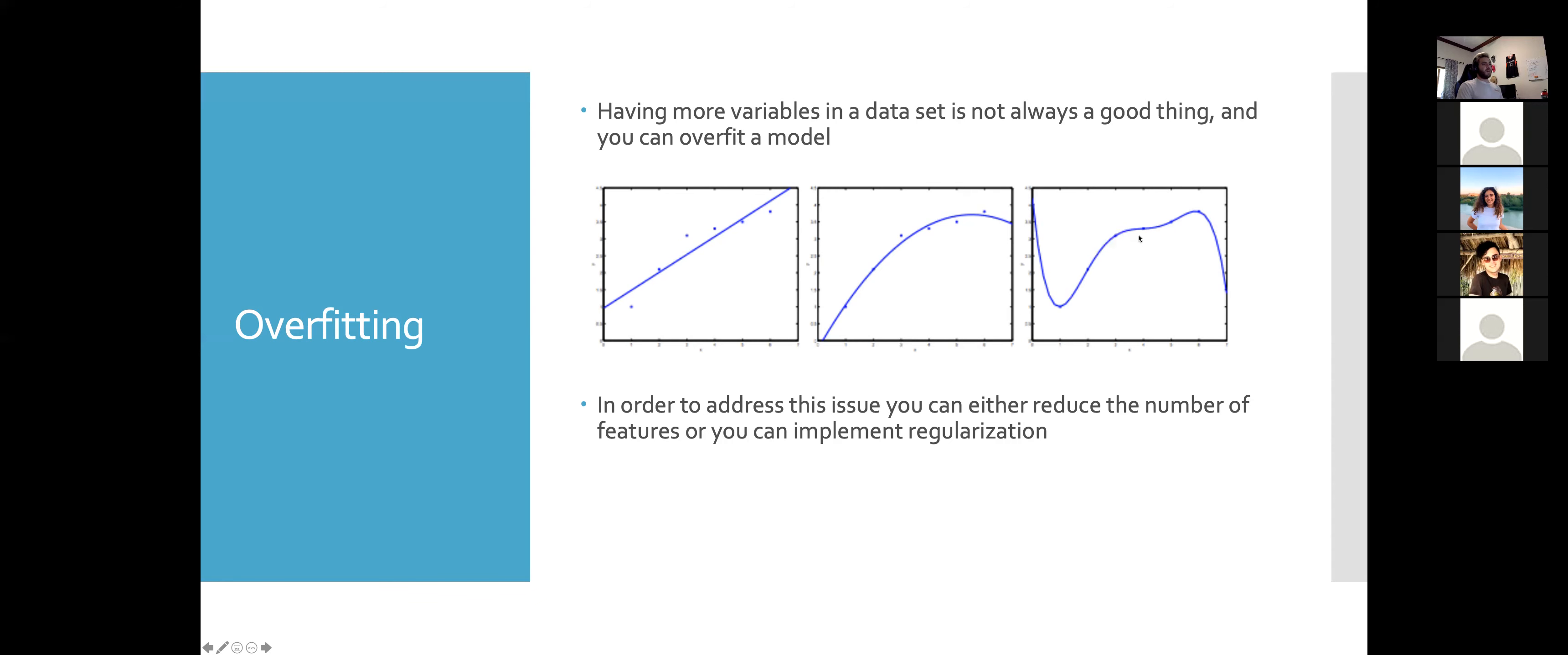Because of the training set, it's completely going along all the points. In order to address the issue of overfitting, we can either reduce the number of features, but sometimes then we'd end up underfitting. So then we can implement what's called regularization.